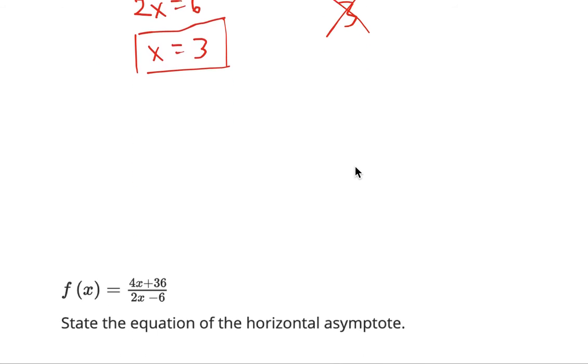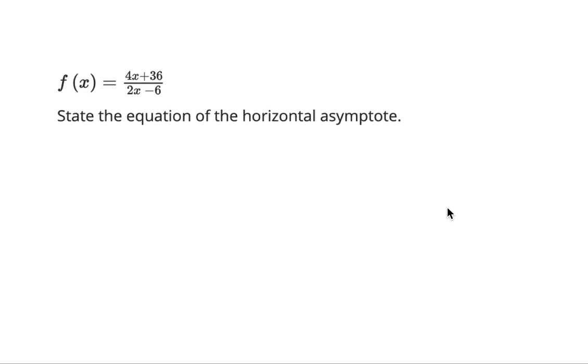Lastly, state the equation of the horizontal asymptote. In this case, there's a couple ways you can do this. Since the degrees of the exponents are both the same, you can take the coefficients of the 4 and 2 and divide them. That gives y equals 2, the equation of the horizontal asymptote.